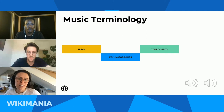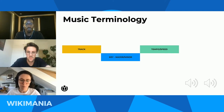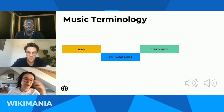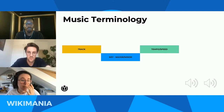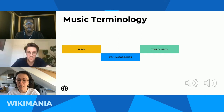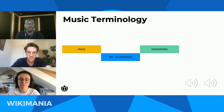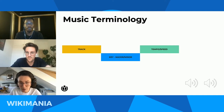Next up we have tempo and speed. All pieces of music have a tempo — in Italian, that's the word for time — referring to the pace and speed of a piece of music. We usually measure this in beats per minute, or BPM, but we also describe music as being either up-tempo or down-tempo. We've got two examples: one is up-tempo, so faster in pace, and one is down-tempo, a bit slower.